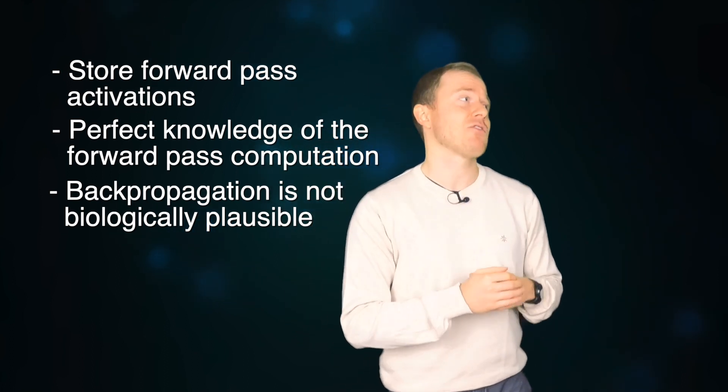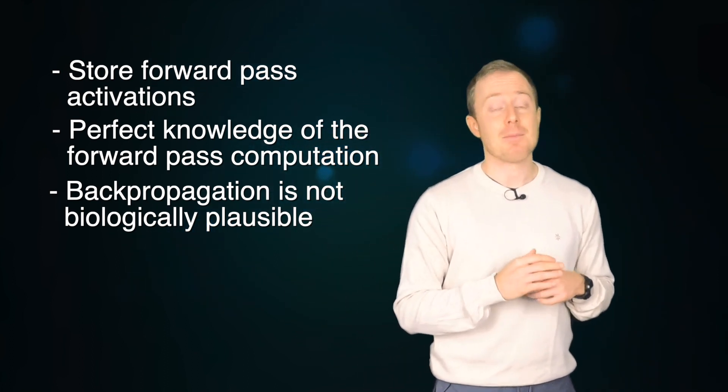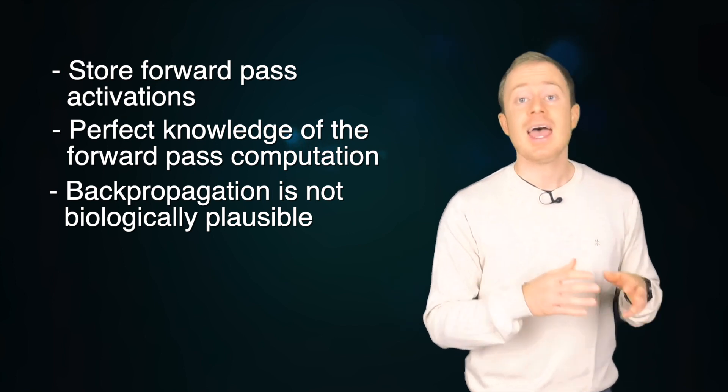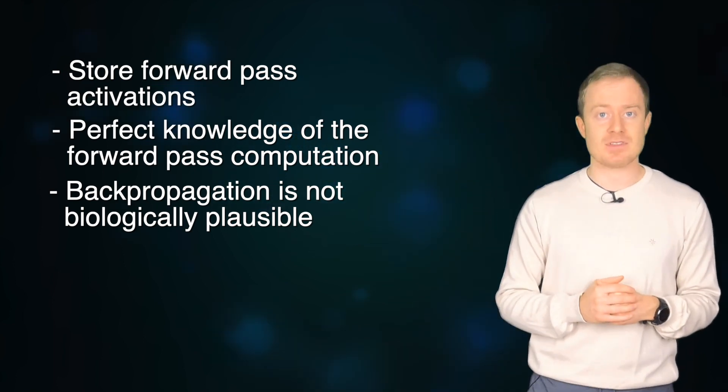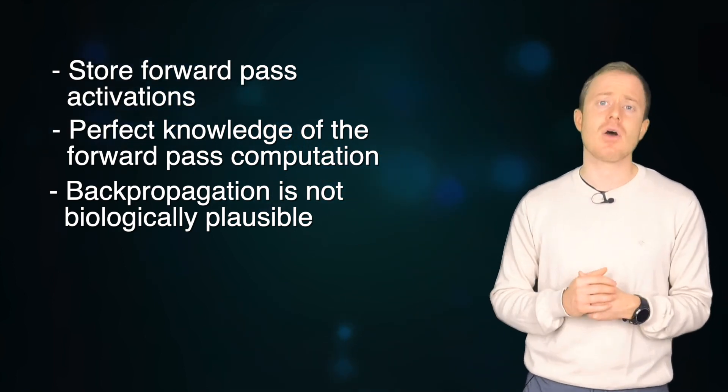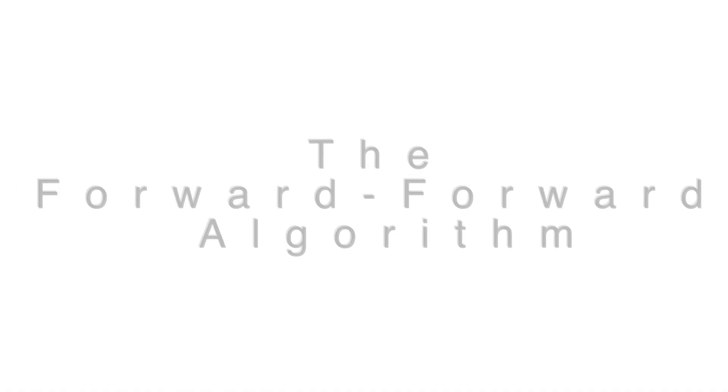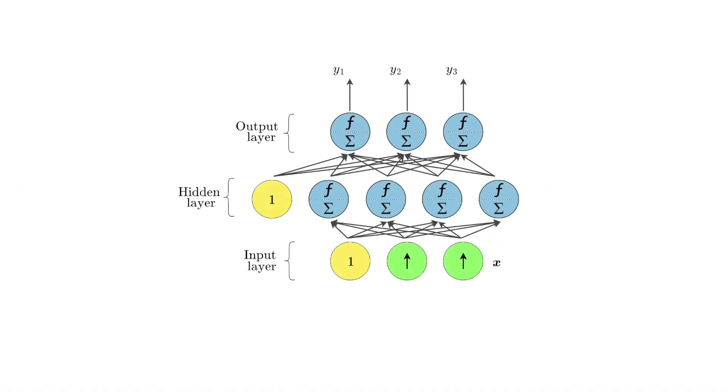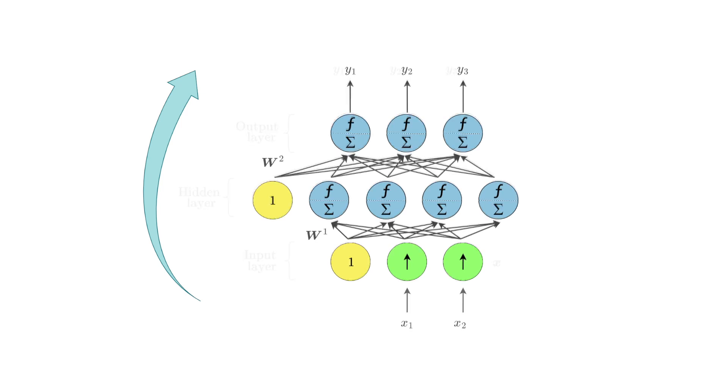So let's see how the forward-forward algorithm can make our networks learn and create useful distributed representations, more similar to how our brains do. Let's start again from our simple MLP. With the FF algorithm, we still have the forward path in the same way as before. We feed an input and we use weights and biases of the hidden and output layers to get the predictions.